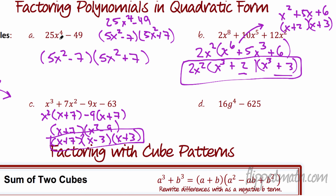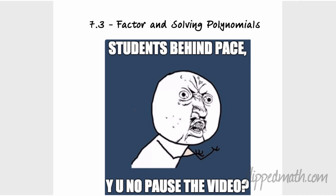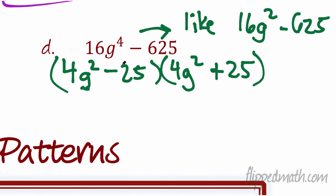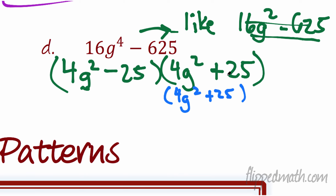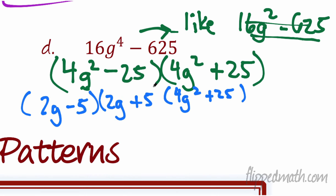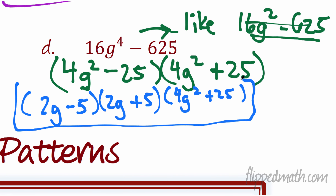Example d looks a lot like example a. Did you get (4g² − 25)(4g² + 25)? This is like 16g⁴ — that's why it's quadratic form. But we're not done yet. While the sum (4g² + 25) can't be factored, the other factor is a difference of perfect squares. So (4g² − 25) gives you (2g − 5)(2g + 5). Final answer: (2g − 5)(2g + 5)(4g² + 25). And those are quadratic forms!